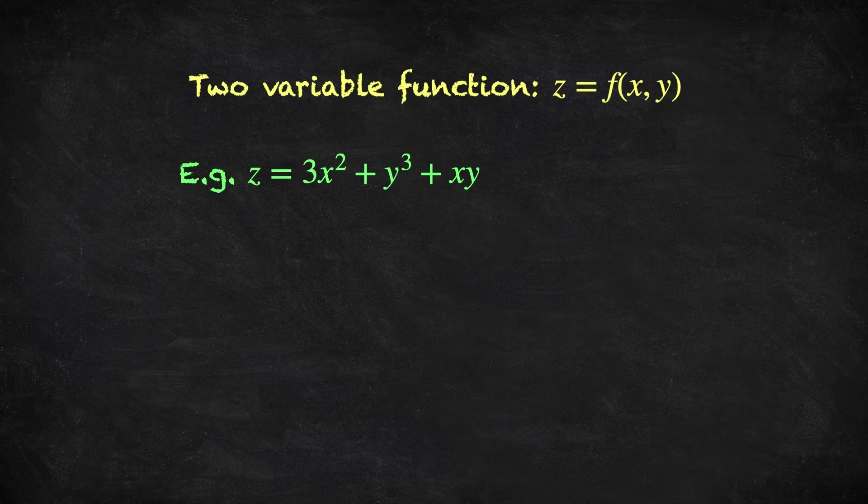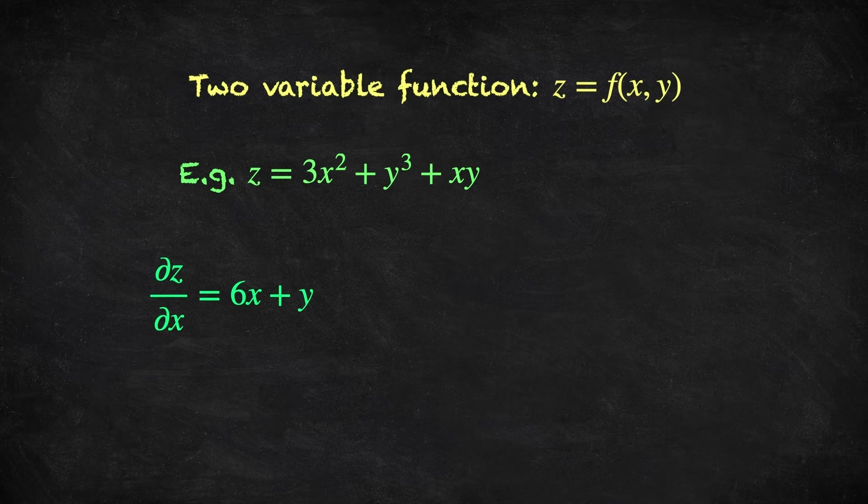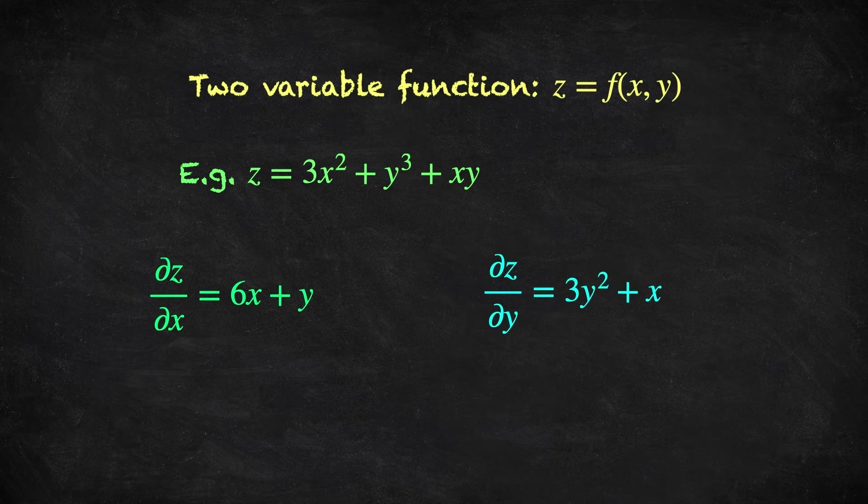Suppose z is a function of two variables x and y, something like z equals 3x squared plus y cubed plus xy. Well, to partially differentiate z with respect to x, we simply treat y as a constant. So we get the partial derivative of z with respect to x is equal to 6x plus y. Because we're taking y as a constant when we take this partial derivative, the derivative of the y cubed term is simply zero, and so it disappears from this expression. This curly denotation just reminds us that z is a function of other variables too, and that we're fixing those as we take this partial derivative. To partially differentiate z with respect to y, we just treat x as a constant, and we get the partial derivative of z with respect to y is equal to 3y squared plus x. Perhaps pause the video and double check that this makes sense. We'll see partial derivatives a lot more in the course, and I'll explain as we go.